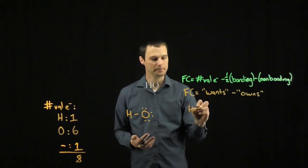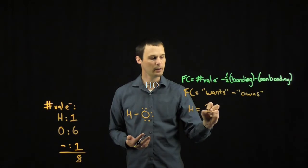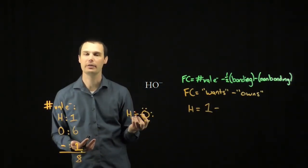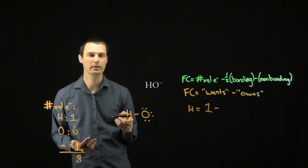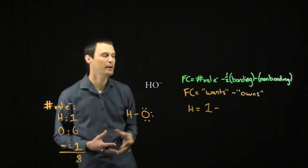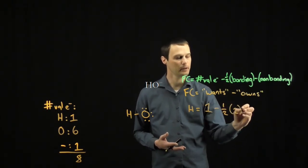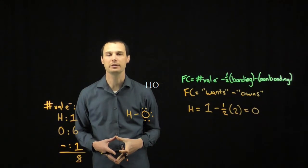For hydrogen then, hydrogen wants one electron in its valence shell, and in our structure here it owns half of the bonding electrons and all of the non-bonding electrons. There are no lone pairs, but there are two electrons shared in the bond, so it owns half of those two bonding electrons. The formal charge on hydrogen then is zero.